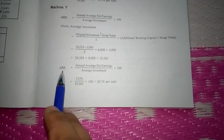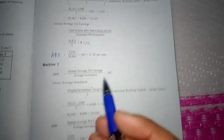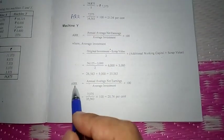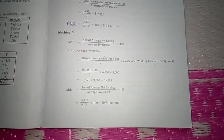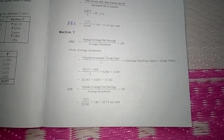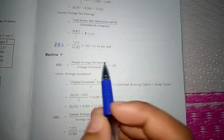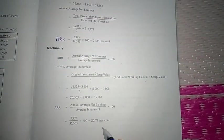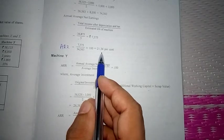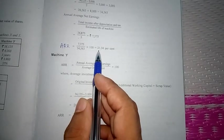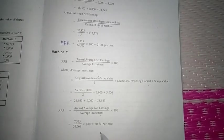So ARR for machine X is 21.34% and ARR for machine Y is 20.74%. When we compare both machines, since the ARR of machine X is higher than machine Y, machine X has to be selected because it yields more return than machine Y. Thank you students.